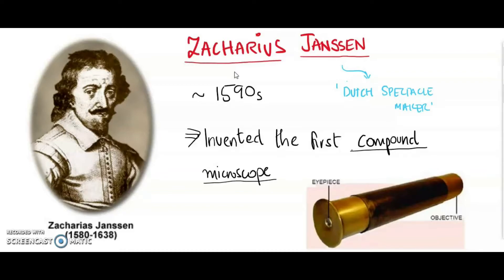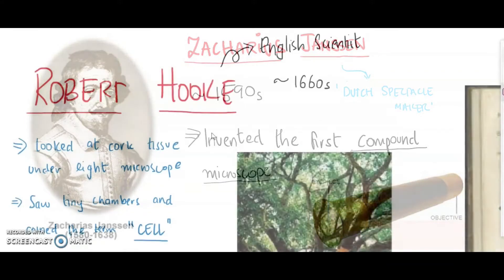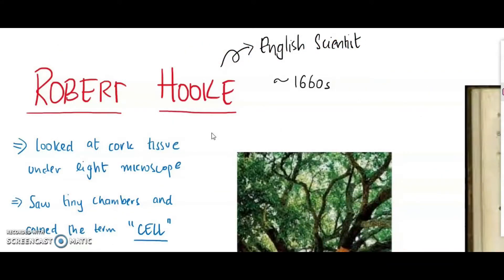It didn't take much time for this microscope to become a hot item in the market, and every naturalist and scientist was getting their hands on it. This brings us to our next scientist. Robert Hooke was an English scientist — you may know him from physics, where he discovered the law of elasticity called Hooke's law. He was a scientist that delved in many fields of science, natural science being one of them. What Hooke did was study plant tissue.